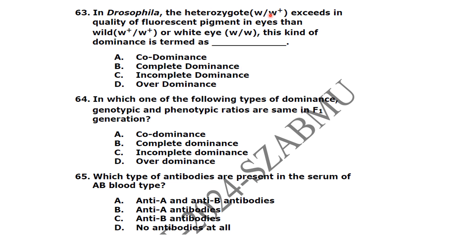In Drosophila, the heterozygous w/w+ exceeds in the quality of fluorescence and pigment in eyes compared to the wild-type homozygous or white-eye heterozygous — this kind of dominance is called overdominance. In which type of dominance are the genotypic and phenotypic ratios the same in F1 generation? In codominance, the ratios are the same.